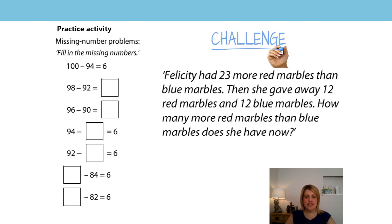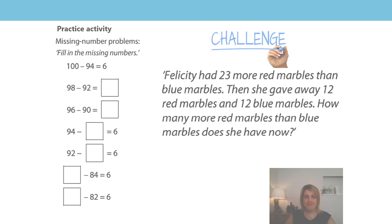It's your turn now. Demonstrate your understanding by filling in the missing numbers. Why not have a go at creating your own related missing number calculation for someone else to fill in — maybe somebody at home. And if you're ready for a real challenge, answer the question on Felicity and her red and blue marbles — that will really impress us. Remember: if the minuend and the subtrahend are changed by the same amount, the difference stays the same. Well done for your learning today. Hope to see you again soon. Bye.